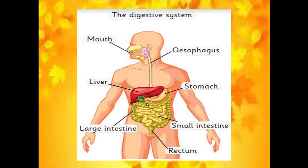We will move on to the pancreas. You can see a small creamy layer below the stomach — this is the pancreas. The pancreas secretes pancreatic juice which plays a vital role in digestion. It reduces carbohydrates to glucose, fats into fatty acids and proteins into amino acids. The digestive juices from the liver and pancreas are released into the small intestine and act upon the food received from the stomach.